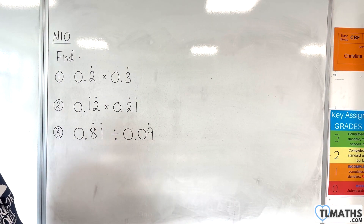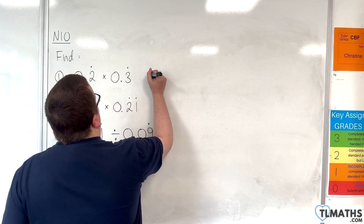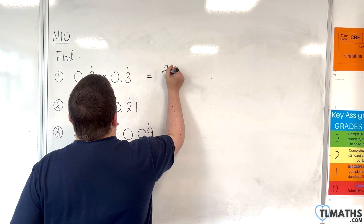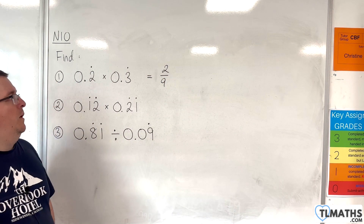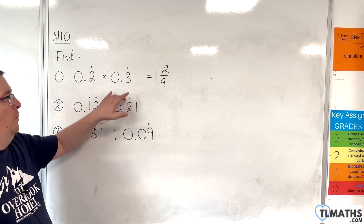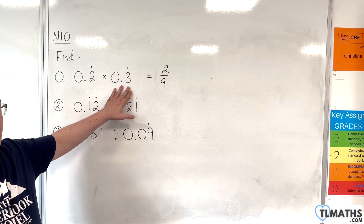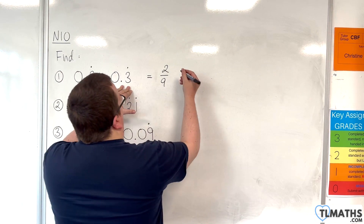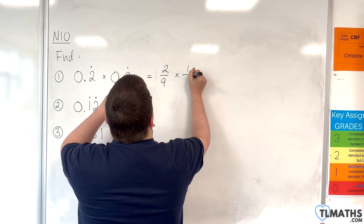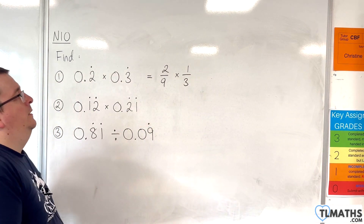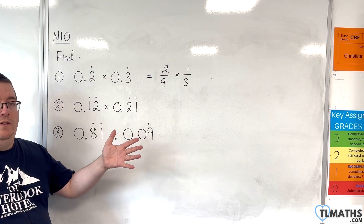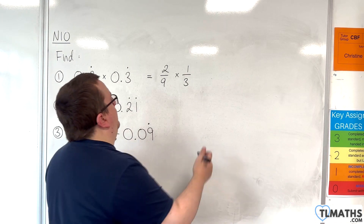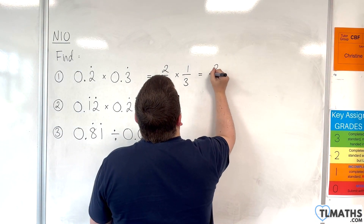For 0.2 recurring, we should be able to spot by now that that's going to be 2 ninths. And 0.3 recurring is the same as 3 ninths, or one third. So actually we're multiplying 2 ninths by one third, which gives us 2 over 27.